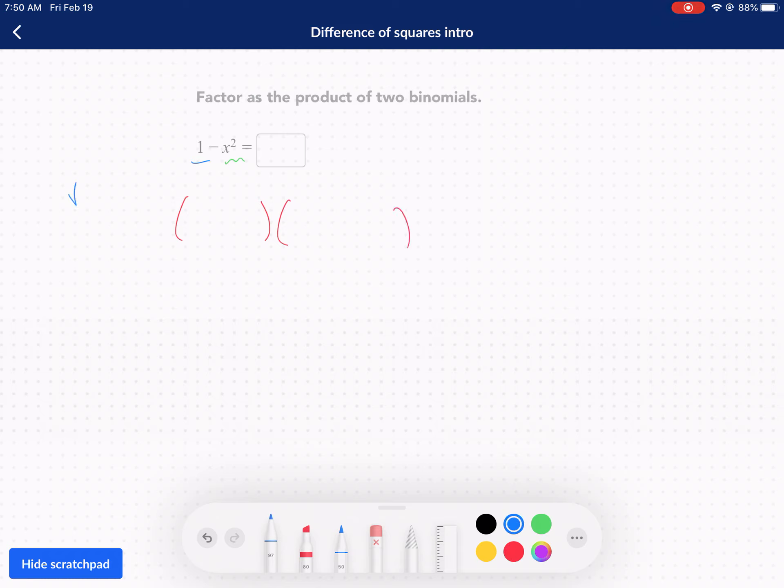We're going to put the square root of one. That's one here and here. We're going to put the square root of x squared, X here, here, make one positive, one negative. And that's it.